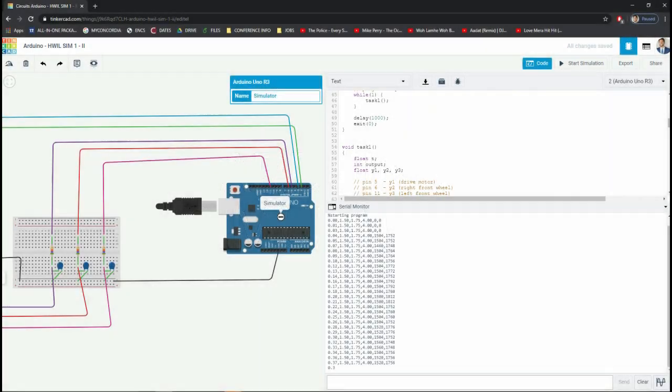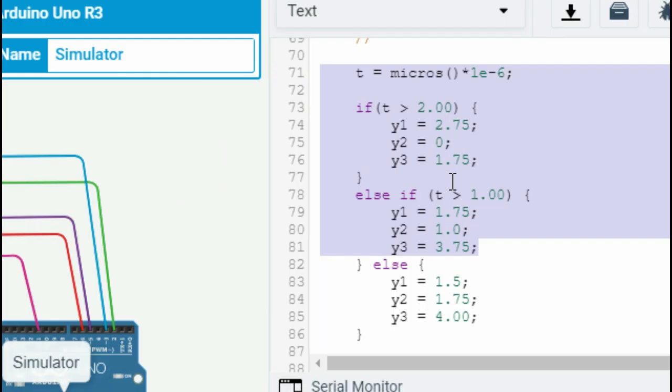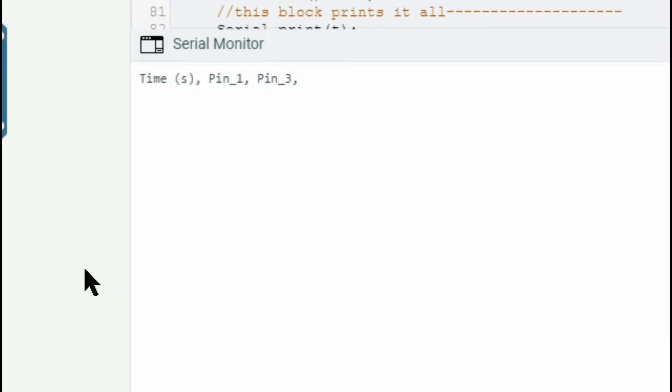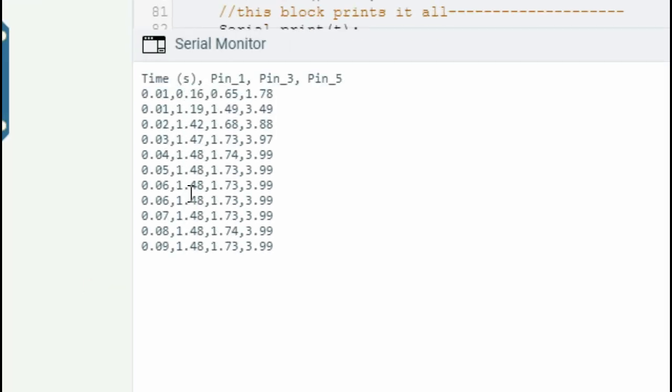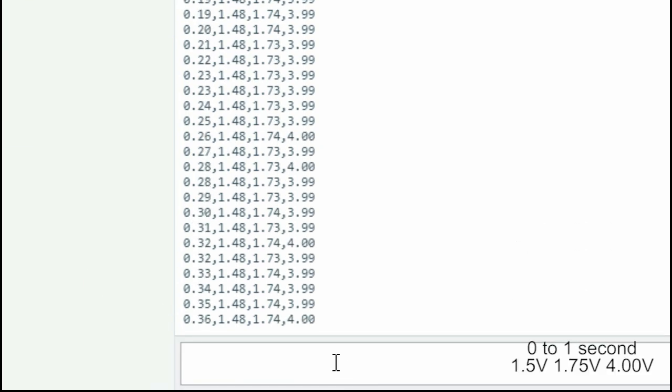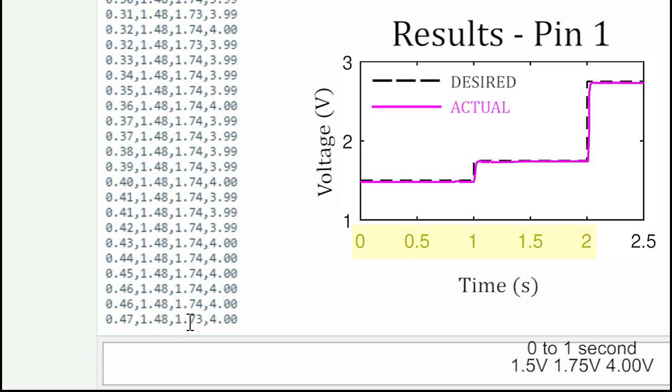We can see what the output looks like here. You have to obtain a voltage of 1.5 volts for pin 1, 1.75 for pin 2, and 4 for the last pin from 0 to 1 second. So it tracks it very well. You have perfect tracking and you almost have no error. That's it for our analog to digital converter program, and I hope you guys learned something new.